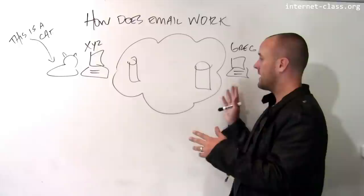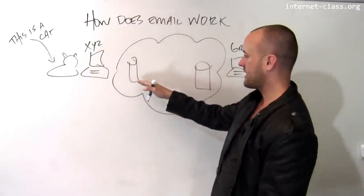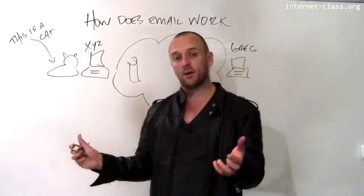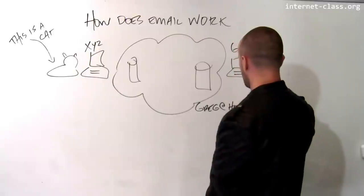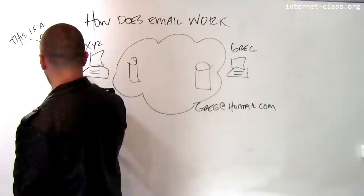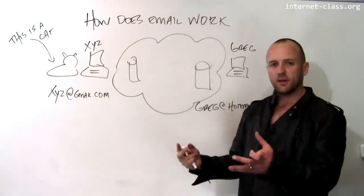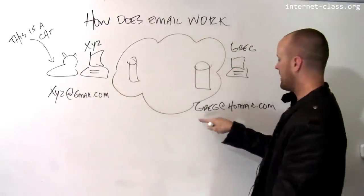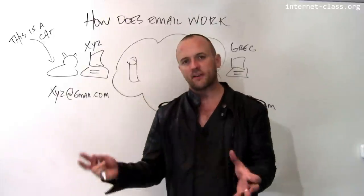So Ziz says she's going to send Greg an email. How does this actually work? The first thing to recognize with email is that it requires communication with some sort of email server. If you receive email at a particular address — say Greg is using greg at hotmail.com and Ziz is using ziz at gmail.com — these names identify the mail server. Gmail.com has to have a mail server that Ziz connects to to retrieve her mail, and hotmail.com has to provide an email server that Greg can connect to. Sometimes you access these using a web browser, but the process is basically the same.